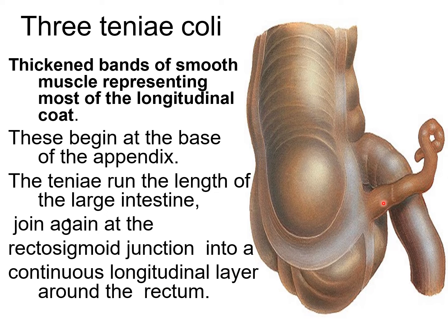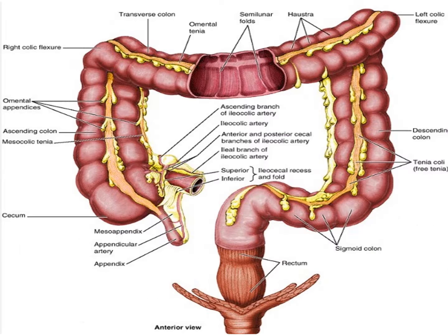This is the appendix; this is the base of the appendix. All three taenia — 1, 2, and 3 — start at the base of the appendix, run the entire length of the large intestine, and join at the rectosigmoid junction to continue as a longitudinal layer around the rectum. You can see one taenia here, two here, and three here.